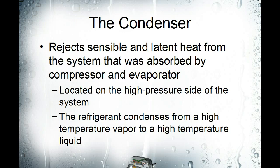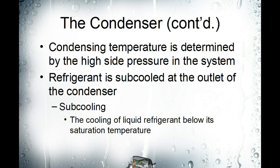The condenser is where we undo all of the sensible and latent heat that we absorbed in the evaporator and dump it to the outside. The condenser is located at the outlet of the compressor and it is the high side, pressure side of the system. The condensing temperature — the saturation temperature of the refrigerant in the condenser — is determined by the high side pressure.